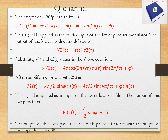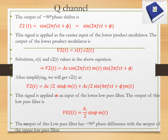In the Q channel, the VCO output is provided with a 90-degree phase shift, making c₂(t) = sin(2πf_c t + φ). This is applied as the carrier input of the lower product modulator. The output v₂(t) = s(t) · c₂(t) = A_c cos(2πf_c t) · M(t) · sin(2πf_c t + φ). After simplifying, v₂(t) = (A_c/2)sin(φ)M(t).